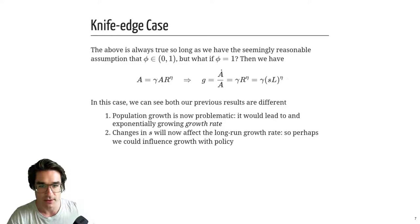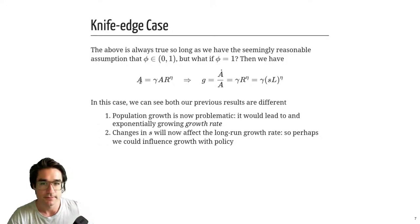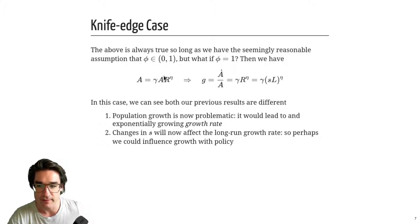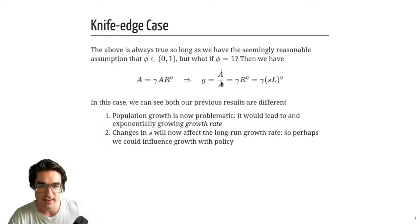What if we assume φ = 1? The production function becomes Ȧ = γ · A · R^η. Dividing by A, the growth rate is G = Ȧ/A = γ · R^η. Assuming R = S·L, that's G = γ · S · L^η. Now G is influenced by S — if there's an R&D subsidy and firms do more research, S goes up and G goes up permanently. So you do get the result people expected, but only at this particular knife-edge φ = 1 case.